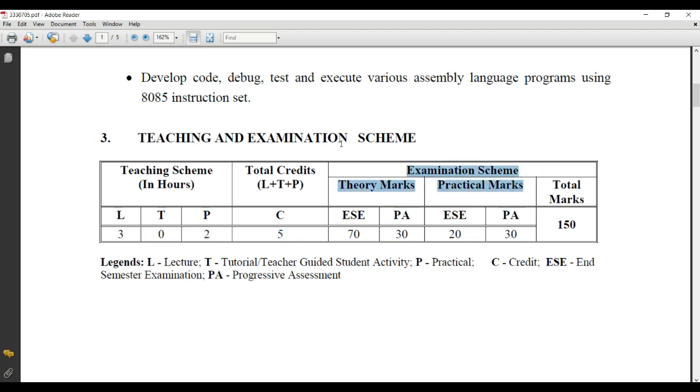Now look at the examination scheme, which is divided into two parts: theory marks and practical marks. Theory marks are divided into ESE and PA. ESE stands for end semester examination, which is conducted by GTU, your university exam of 70 marks. PA is for progressive assessment, which in theory is your mid-semester examination conducted by your department.